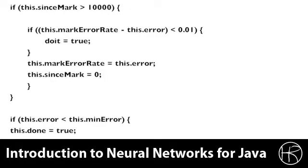If the number of iterations that we've called since the mark has been 10,000 or higher, then we need to sample the error rate. We look at the error rate and we compare it. If it's less than 1%, then we're going to set doit to true because we found an acceptable neural network.